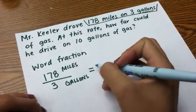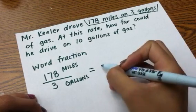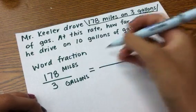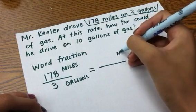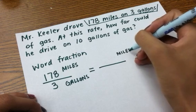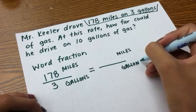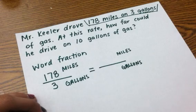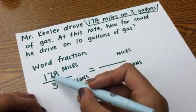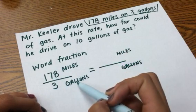Now, I can set it equal, as I set up my proportion, to another word fraction. So first, I'm going to start by writing my words. You can also just put the first letter if you want, but I'm going to write the whole word. So, I have 178 miles to 3 gallons of gas.